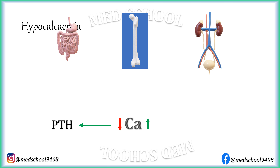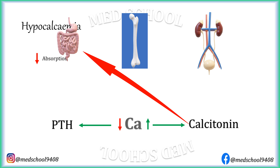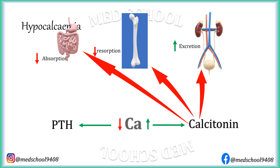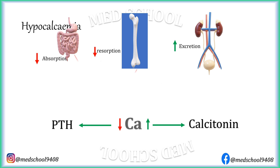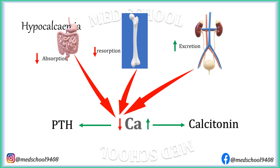When serum calcium level rises, this induces secretion of calcitonin from the thyroid gland. Calcitonin causes decreased absorption of calcium through the intestine, increased deposition of calcium into bones, and increased excretion of calcium through kidneys. All these processes lead to a fall in serum calcium level.